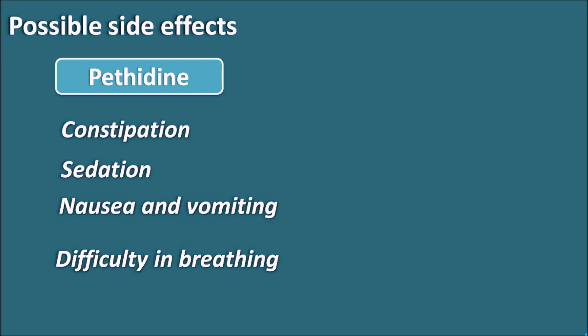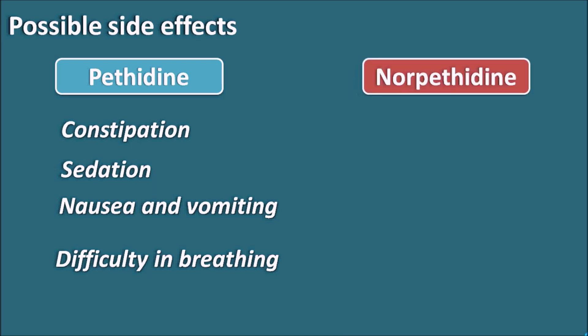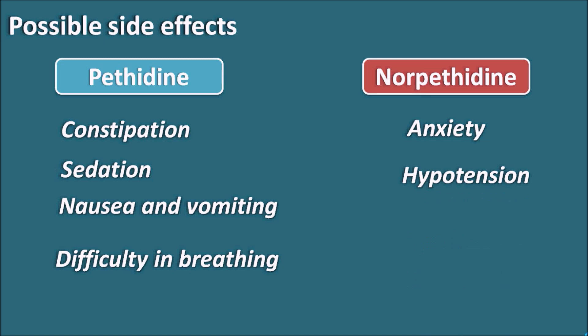One of the metabolites of Pethidine is Nor-Pethidine, which is also active. Nor-Pethidine can produce side effects like anxiety, hypotension, and convulsions. Nor-Pethidine produces excitatory effects on the CNS which may produce anxiety as well as convulsions.